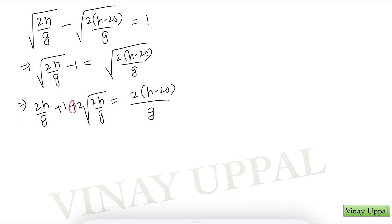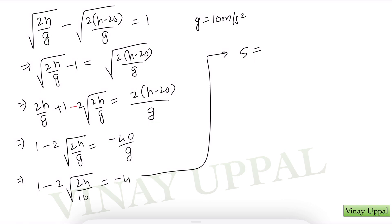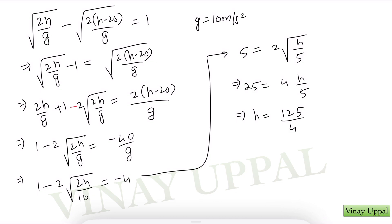Cancelling 2H/G from both sides leaves 1 − 2√(2H/G) = −40/G. With G = 10 m/s²: 1 − 2√(2H/10) = −4, so 5 = 2√(H/5). Squaring: 25 = 4H/5, giving H = 125/4 = 31.25 metres. That is the height of the tower.